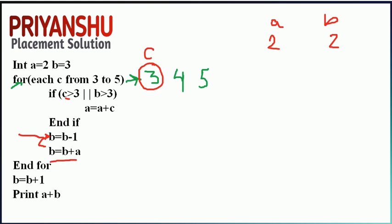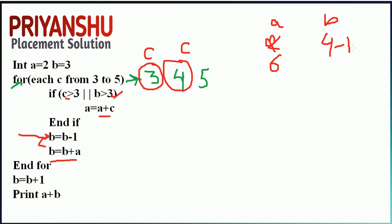Then b equals b plus a: b equals 2 plus 2 equals 4. For c equals 4: 4 is greater than 3 AND 4 is greater than 3, condition is true, so a equals a plus c: 2 plus 4 equals 6. Then b equals b minus 1 equals 3, and b equals b plus a equals 3 plus 6 equals 9.